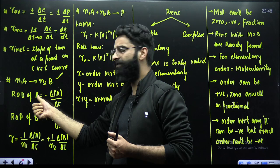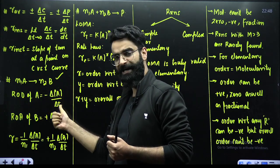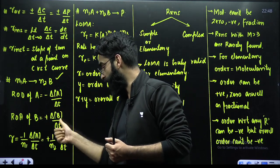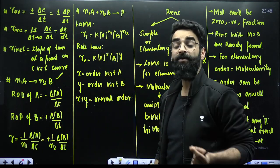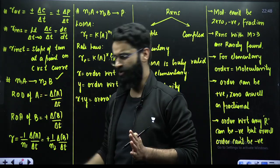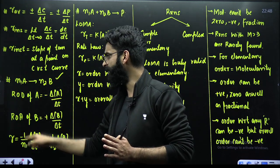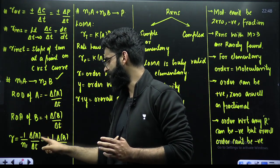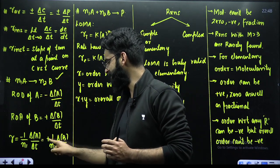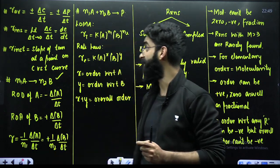Rate of disappearance of reactant equals minus change in concentration of reactant divided by time interval. Rate of appearance of product equals plus change in concentration of product divided by time interval. For rate of reaction with respect to A, it's minus one divided by stoichiometric coefficient times change in concentration of A divided by time interval. With respect to product B, it's plus one divided by stoichiometric coefficient times change in concentration of B divided by time interval.